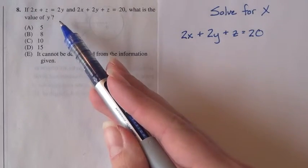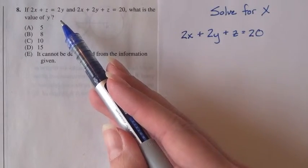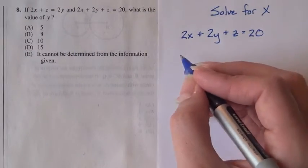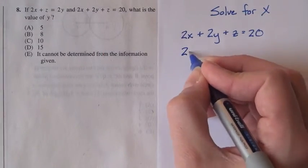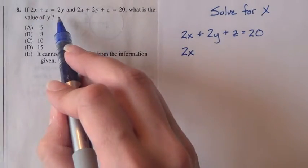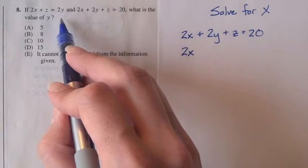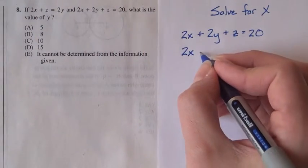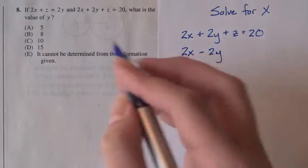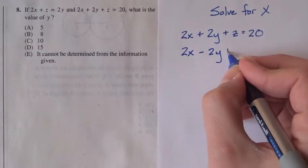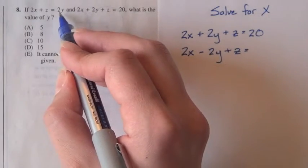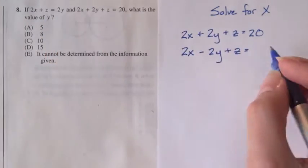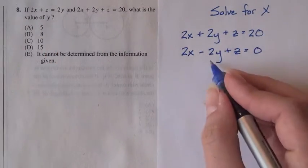Now I want to write this second equation directly underneath it in a way that will make it easy to cancel out the variables. So I'll put the 2x underneath this 2x. I'm going to move this 2y over to the other side of the equation, minus 2y. And the plus z is still there. Since we subtracted this 2y out from both sides, this is equal to zero.